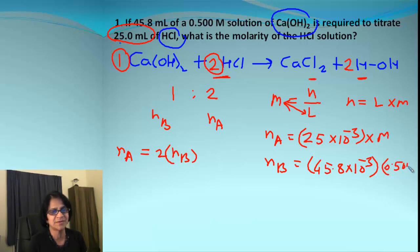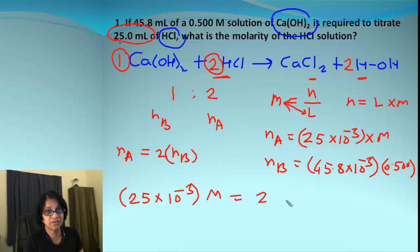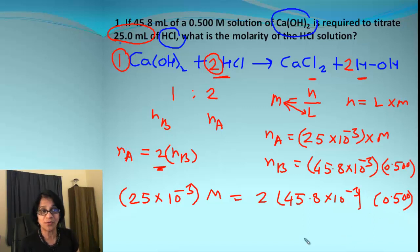This formula is 25 × 10^-3 times M. It's two times—remember there is two times the number of moles—45.8 × 10^-3 times 0.500. When you solve for M, you get the answer M equals 1.83. That's the molarity for the acid.